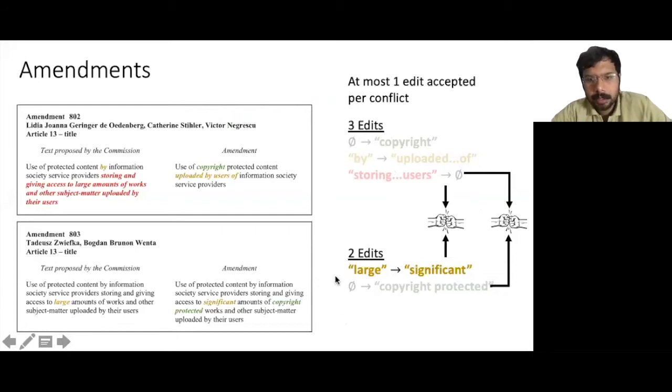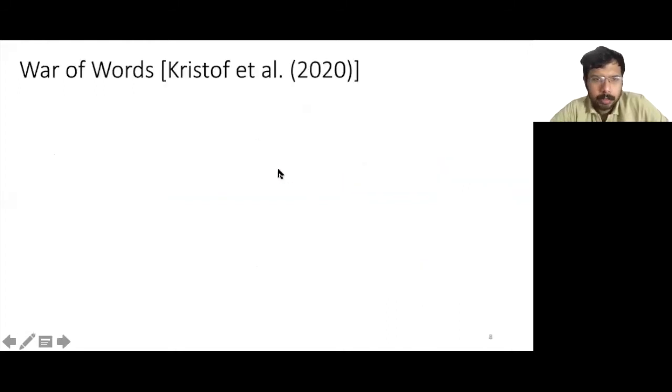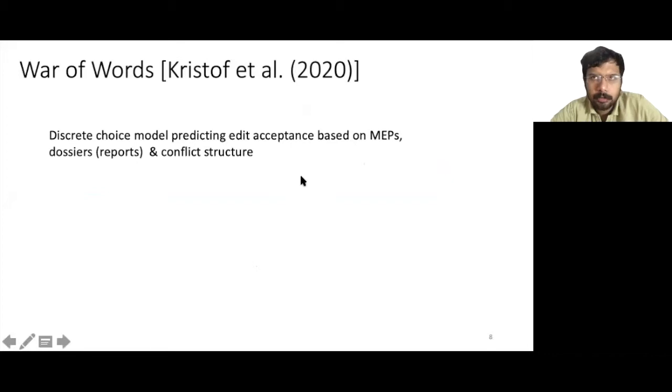Thus, the final report that is presented to the Parliament will have just one edit that is replacing large by significant for this portion of the law. In our previous work, we introduced a discrete choice model for predicting edit acceptance based on the identities of the MEPs, the dossier, that's a report, and the conflict structure.